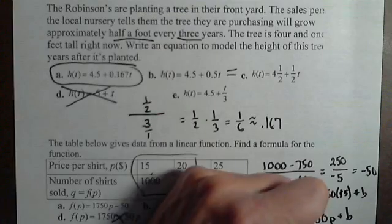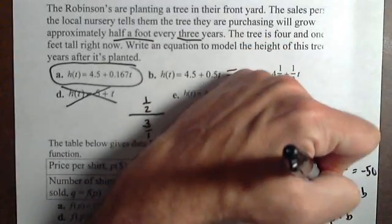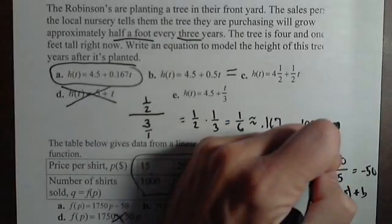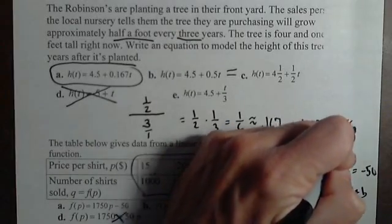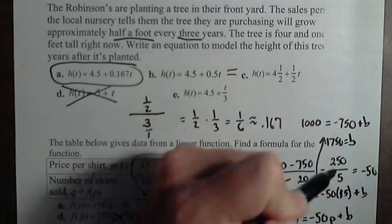Okay, so what we get from this equation, I'm gonna come up here and write it, is 1000 equals negative 750 plus b. Add 750 to both sides, we get b equals 1750.